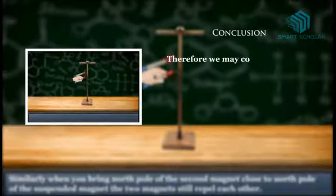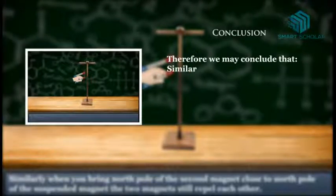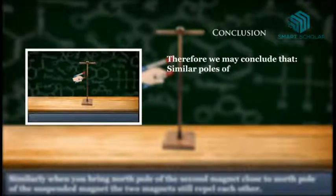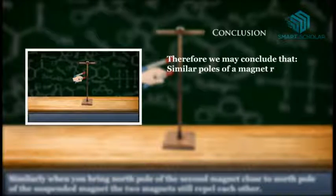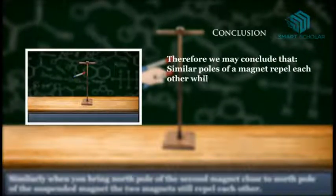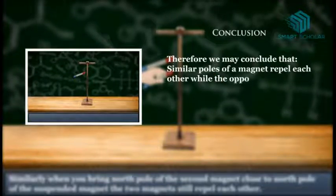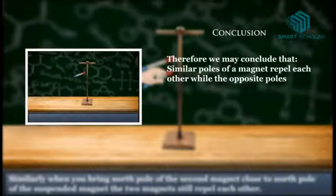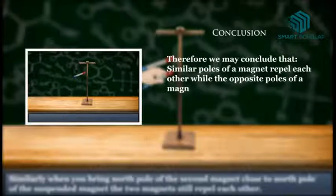Therefore, we may conclude that similar poles of a magnet repel each other, while opposite poles of a magnet attract each other.